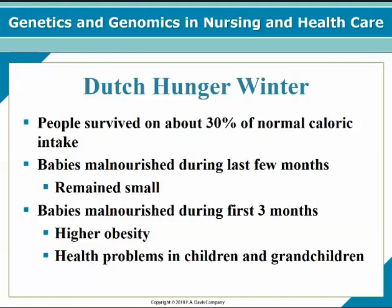Babies malnourished in the last few months of gestation remained small and never caught up, despite having adequate nutrition after birth. However, those deprived only in the first three months of gestation were born at normal birth weights and were healthy at birth, but developed higher rates of obesity and more health problems in general. Even more interesting, future generations of those malnourished in the first three months also had higher rates of obesity and cardiovascular disease.